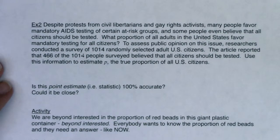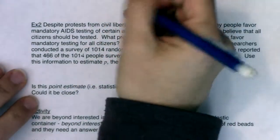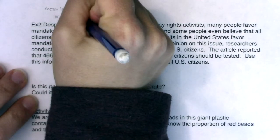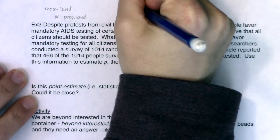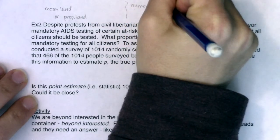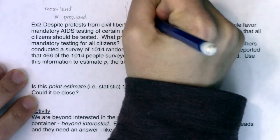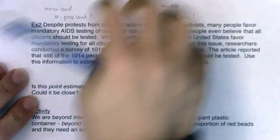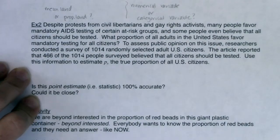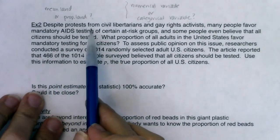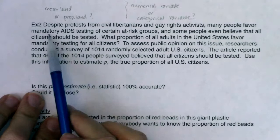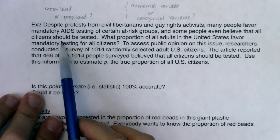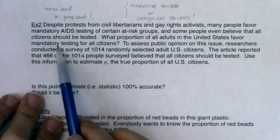Let's read this question, and I want us to answer: am I in mean land or am I in proportion land? Or another way of asking that is: do I have a numerical variable or a categorical variable? So find one that works for you and stick to it. Here we go: 'Despite protests from civil libertarians and gay rights activists, many people favor mandatory AIDS testing of certain at-risk groups, and some people even believe that all citizens should be tested. What proportion of adults in the United States favor mandatory testing for all citizens?'